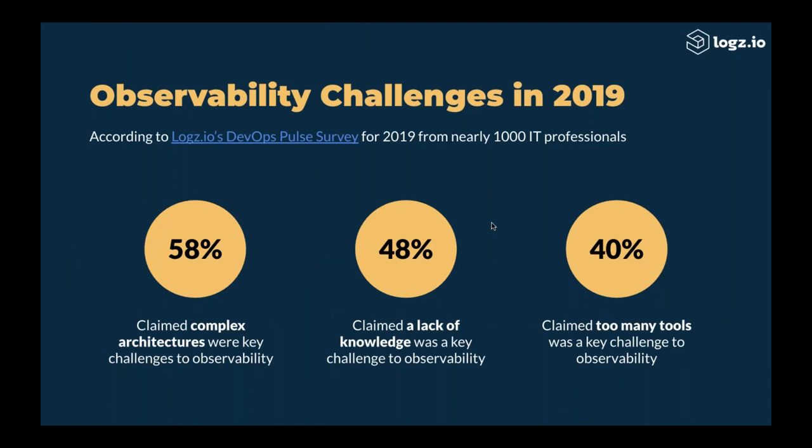According to the DevOps Pulse survey that we launched and released — a very interesting survey, and we have a link in the webinar — one of the things we found is that a lot of organizations are faced with very complex architectures, which makes it difficult to monitor and create observability. That complex architecture comes from the need to be in the cloud, the need for fast deployments, and the need to have a really fast development cycle to stay competitive, which pushes organizations into cutting-edge technologies.